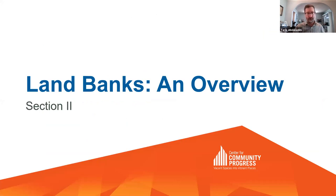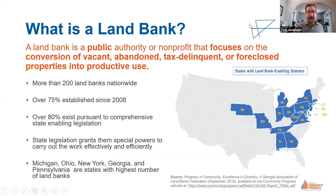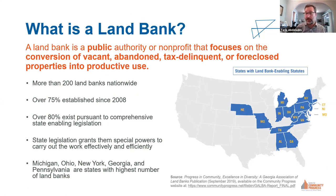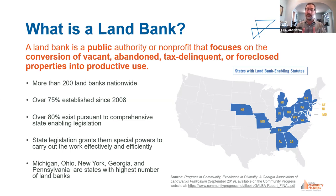So what is a land bank? A land bank is a public authority or nonprofit focused on the conversion of these problem properties. There are more than 200 land banks nationwide, and the overwhelming majority have been created following the Great Recession. Many communities turned to land banks to help deal with the historic legacy of distressed properties — both in legacy cities and from the new wave of foreclosures the Great Recession produced. Over 80 percent of these land banks are created pursuant to comprehensive state enabling legislation, which gives them special powers to intervene in the tax foreclosure process more cost-effectively and allows them to carry out that work pursuant to more equitable outcomes.